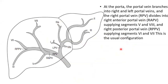At the porta hepatis, the portal vein branches into right and left portal veins. The right anterior portal vein supplies segments five and eight, and the right posterior portal vein supplies segments six and seven.